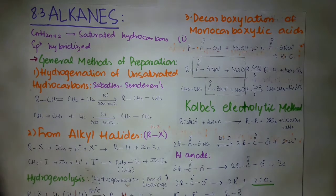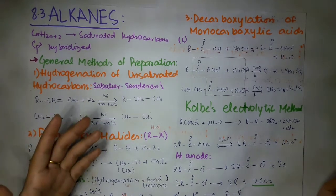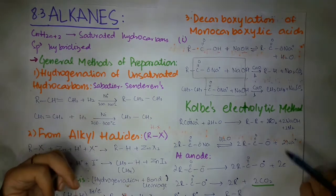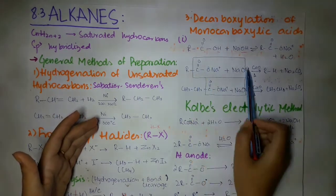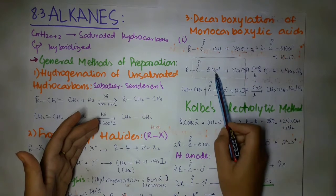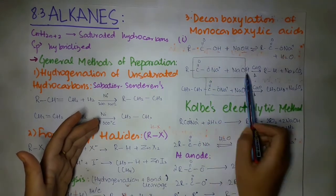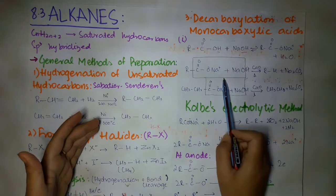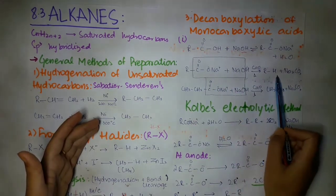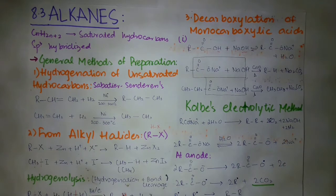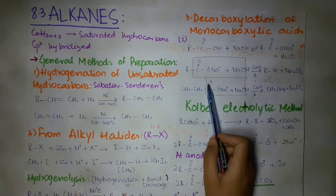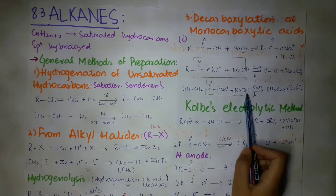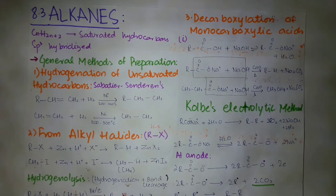We treat the sodium salt of monocarboxylic acid with soda lime. The carbon dioxide part is removed in the form of sodium carbonate (Na2CO3). The R group combines with H to form an alkane, and Na2CO3 is released. For example, if the alkyl group is ethyl, then CH3CH2 combines with hydrogen to form ethane, and Na2CO3 is released.